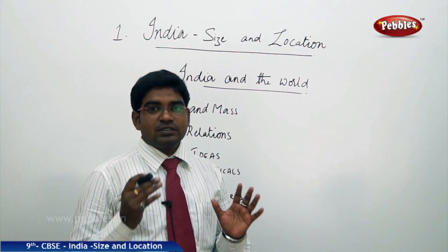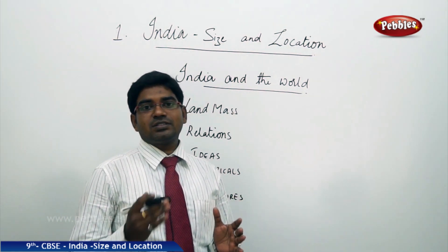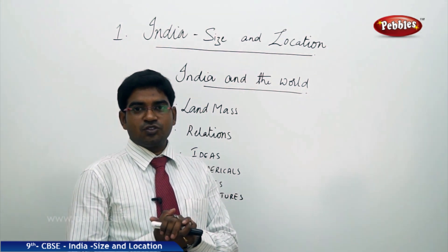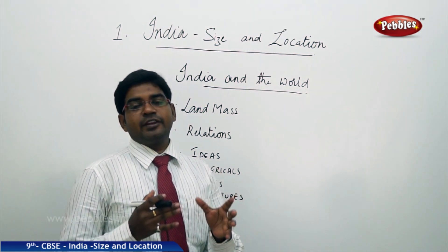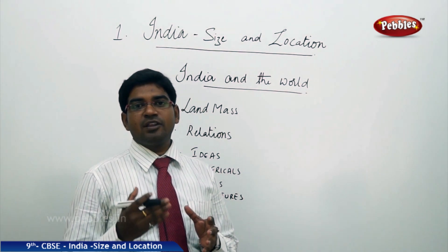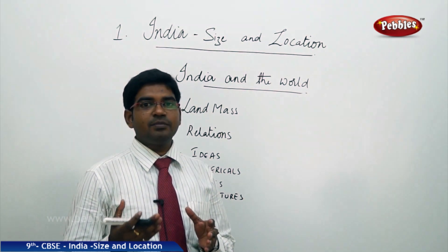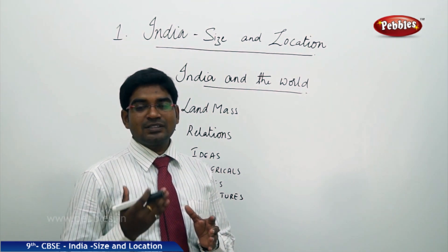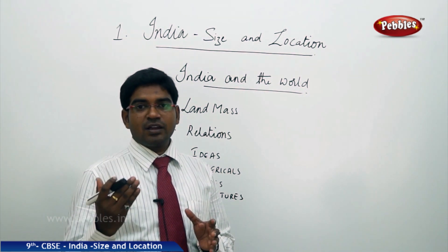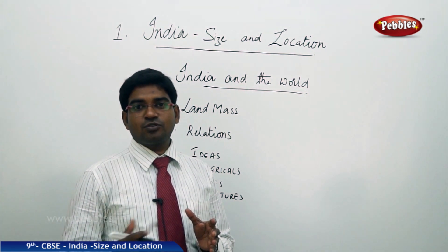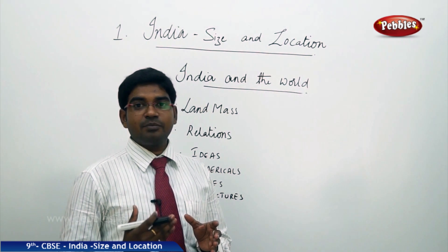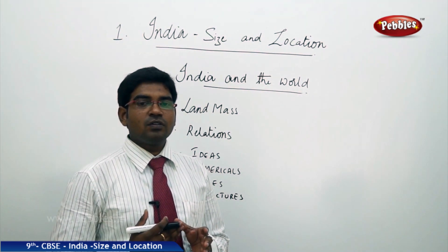The Indian standard meridian is fixed at 82 degrees 30 minutes. This is the standard meridian for Indian time and it passes through Mirzapur in Uttar Pradesh. It also connects to Sri Lanka, which follows the same Indian timings.